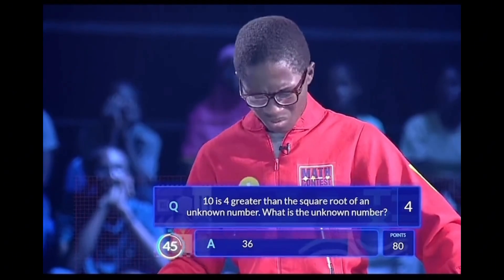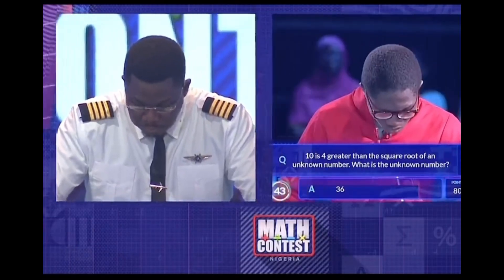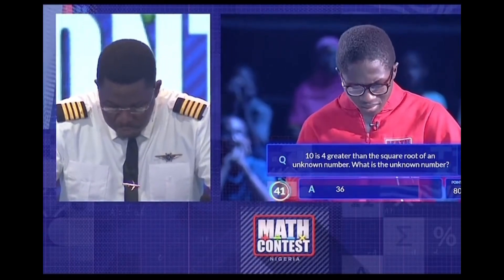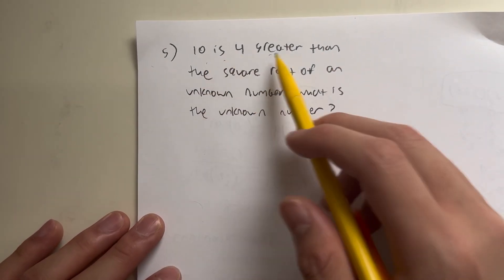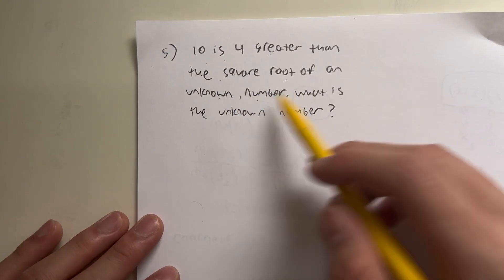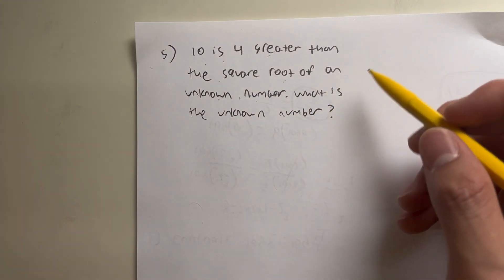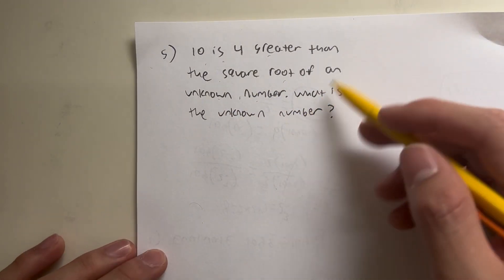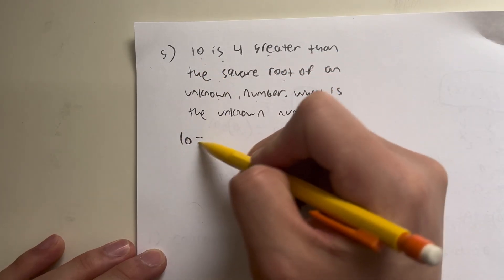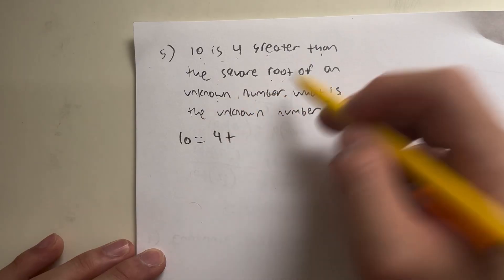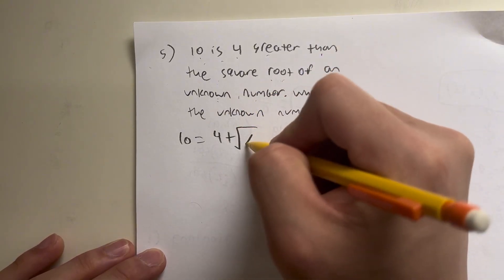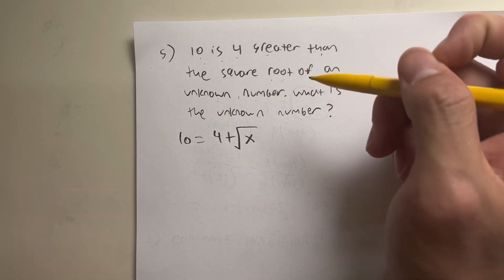10 is 4 greater than the square root of an unknown number. What is the unknown number? I have no idea how he did this question in his head. So for our last question today, we have 10 is 4 greater than the square root of an unknown number. What is the unknown number? Now, basically, what we have to do is form an equation. So 10 is 4 greater, so that's 4 plus, than the square root of an unknown number. So the square root of a number we'll call x. And basically, we're just solving this.